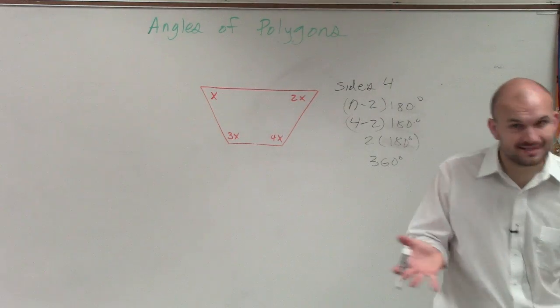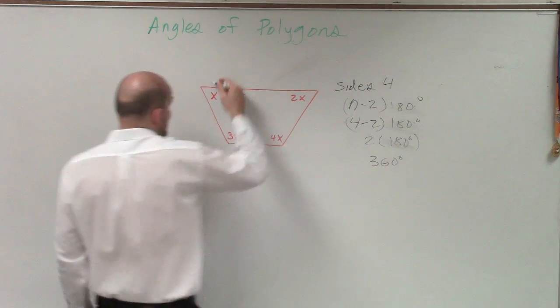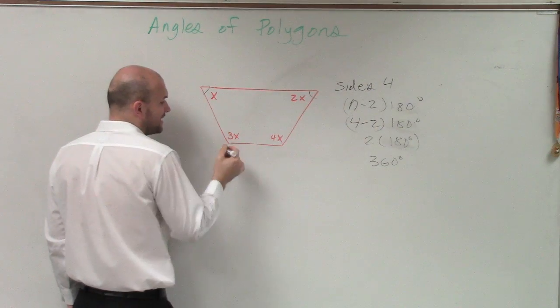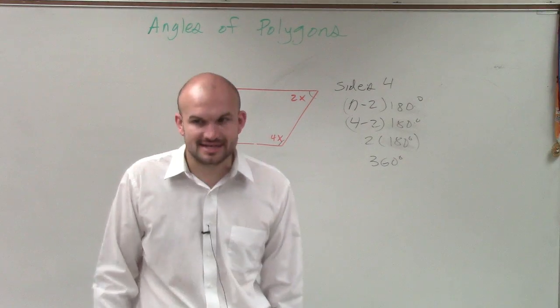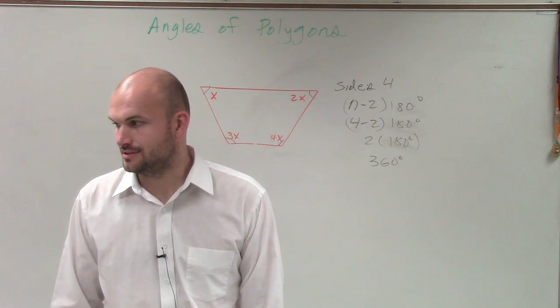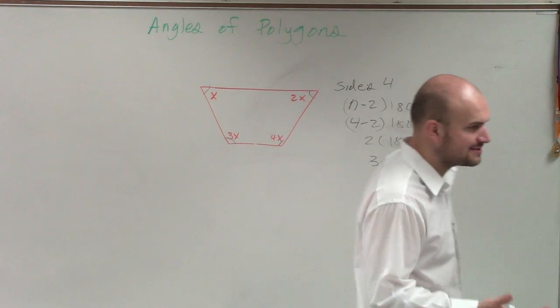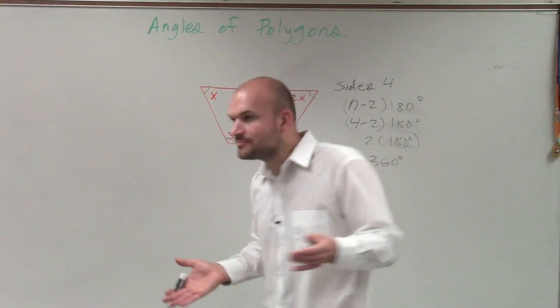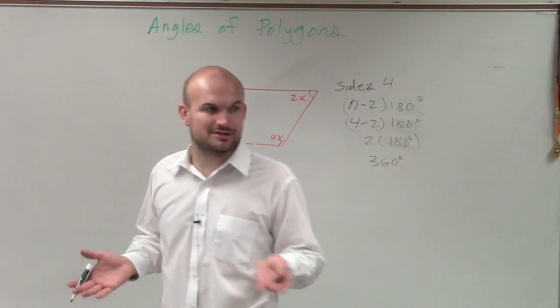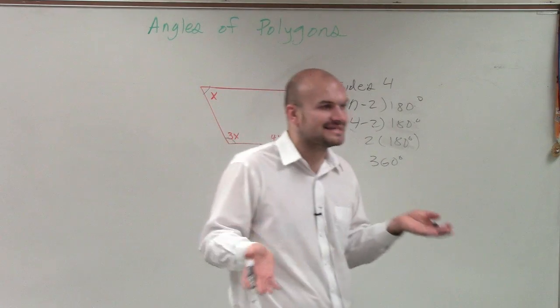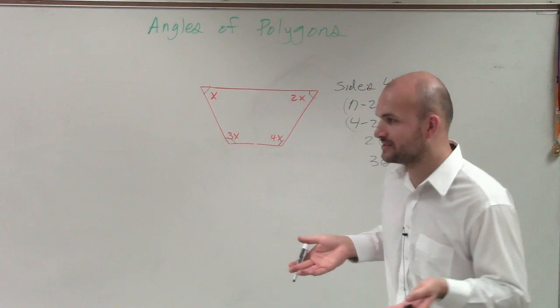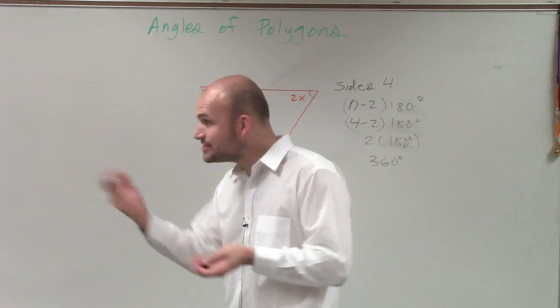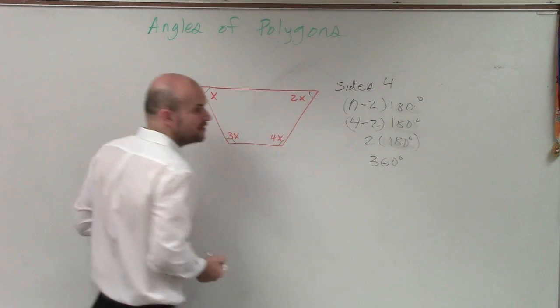What that means, Elizabeth, is this angle plus this angle plus this angle plus this angle equals 360 degrees. So we need to find the values of x. So what would probably be the best thing then I would want to do to be able to solve x? I need to create something. And it starts with an e and ends with a shun. Equation, exactly. I can create an equation.